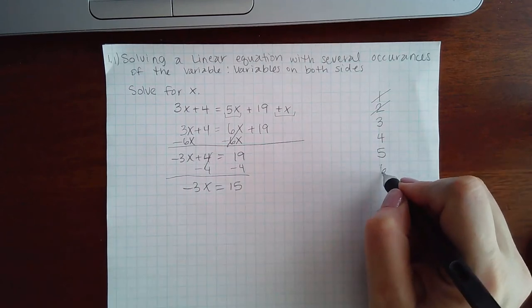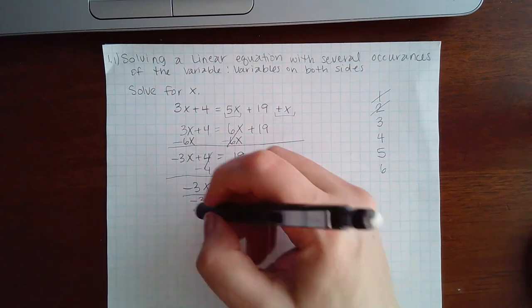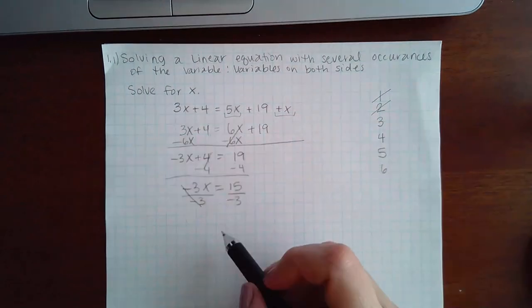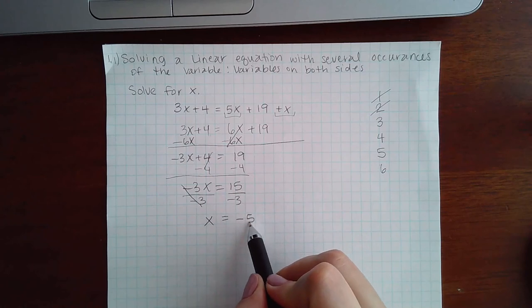And then step six is to divide by the coefficient. So I'm going to divide by negative 3 so that the entire number and sign cancels and I'm left with just x all by itself. And this is negative 5.